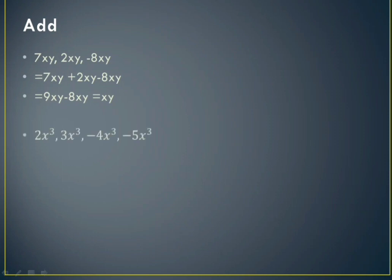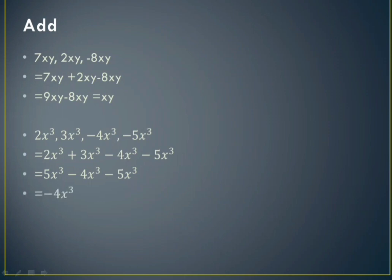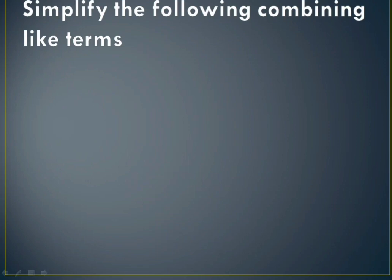Next: 2x cubed, 3x cubed, minus 4x cubed, minus 5x cubed. Every term has x cubed, so they are all like terms. We write 2x cubed plus 3x cubed minus 4x cubed minus 5x cubed. Now 2x cubed plus 3x cubed is 5x cubed. Then minus 5x cubed and plus 5x cubed cancel out, and we are left with minus 4x cubed as our answer.